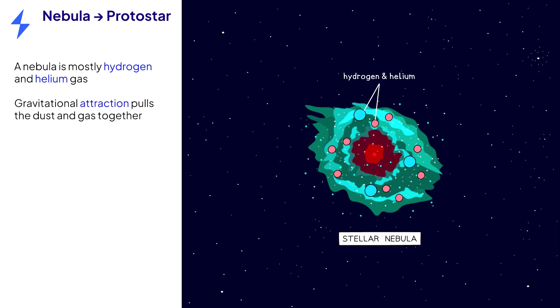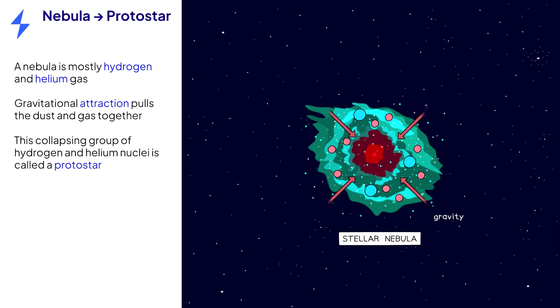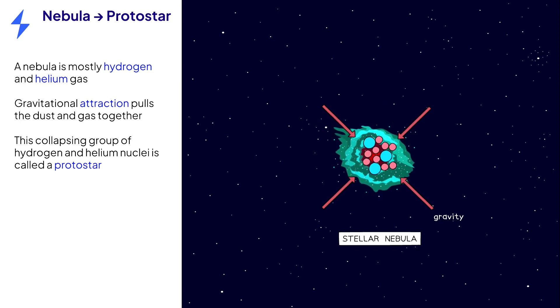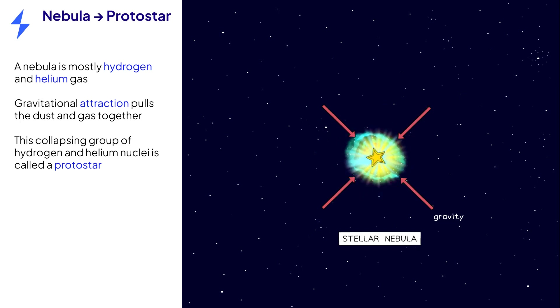Over time, the attractive force of gravity pulls the dust and gas together. This grouping of hydrogen and helium nuclei is called a protostar.